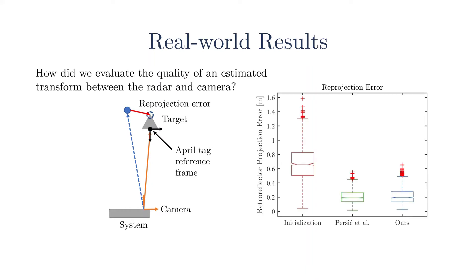On the right is a plot that compares the reprojection error of the initial transform, a comparison method, and our method's parameters. As you can see, our method greatly improved from the initial values and performed comparably to the target-reliant method. Since the comparison method optimizes the evaluation metric, we do expect the comparison method to slightly outperform ours.